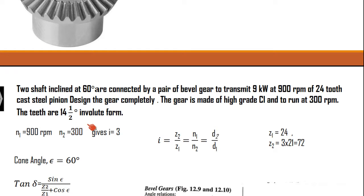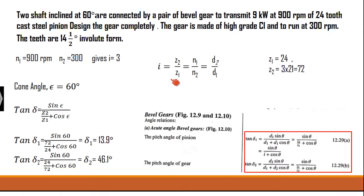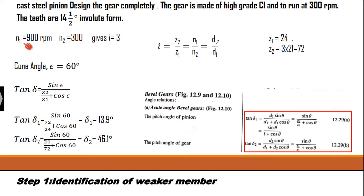This is a combinational type of question where the shaft angle is given — the angulation between the shaft is an acute angle. So we have to go for the acute angle type of bevel gear. The parameters n1, z1, n2 etc. are given. We can find the gear ratio, which is 3.